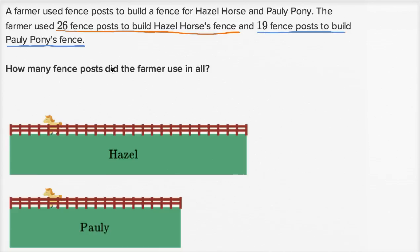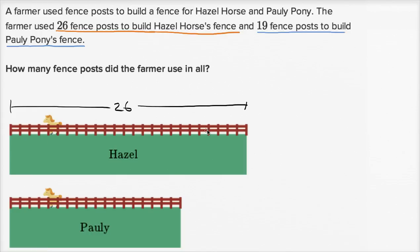Whenever you think about a word problem like this, what are they asking? What's the story in our head? A farmer is building fence posts for two different horses, Hazel Horse and Polly Pony, and there's even a picture of them here — they look very similar. The farmer used 26 fence posts to build Hazel Horse's fence — those are the 26 fence posts right over here. I'll just take their word for it that there are 26. And then 19 fence posts to build Polly Pony's fence — those are 19 fence posts right over here.